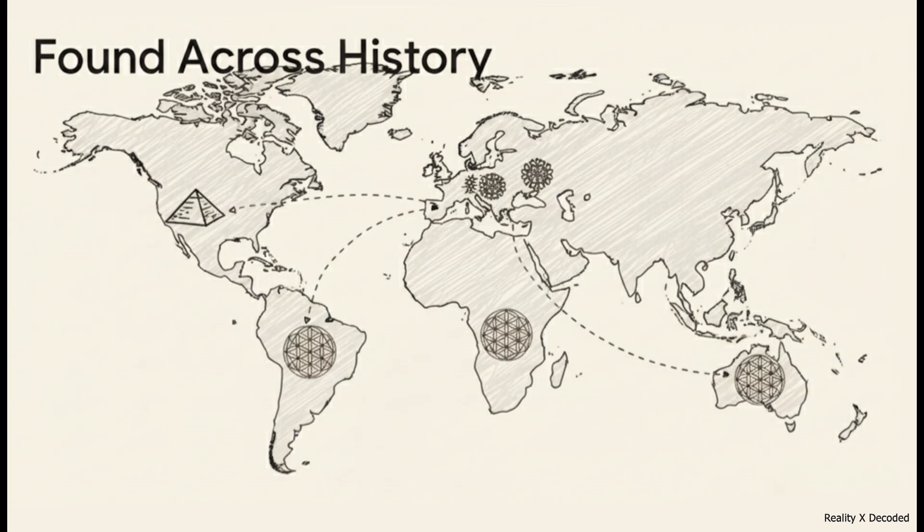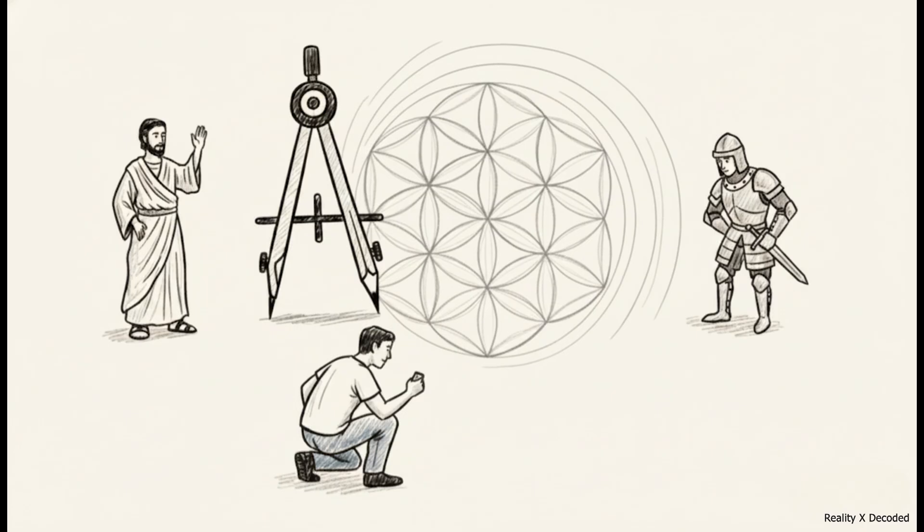For a long, long time, people saw this as proof. It had to be some ancient, shared knowledge. But the reality is actually so much more elegant. Here's the real reason it's everywhere. The pattern wasn't a secret that got passed down. It's an inevitable discovery. Seriously, anyone, in any culture, at any point in history, who just starts playing around with geometry using a compass and a straight edge, is going to find this exact shape.